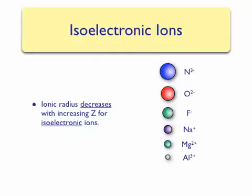We see a special trend when looking at isoelectronic ions. All the ions shown are isoelectronic with neon. We see that as the atomic number increases between nitrogen and aluminum, the ionic radius will also decrease. This is due to the increase in effective nuclear charge as Z increases, which causes the electron cloud to be drawn closer to the nucleus, decreasing the size of the ion.